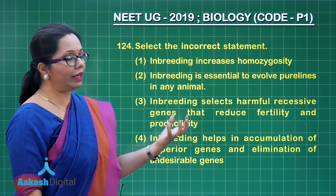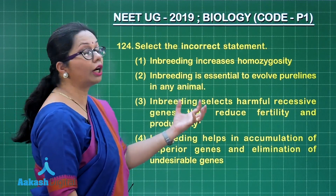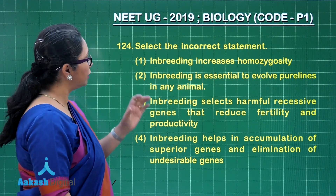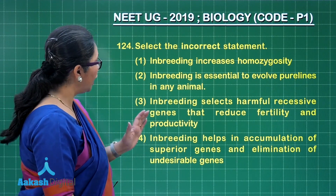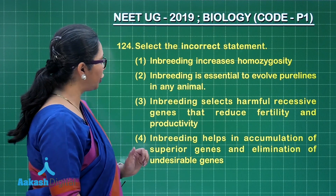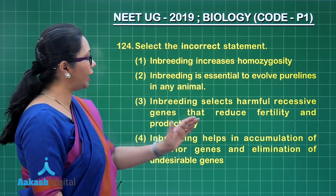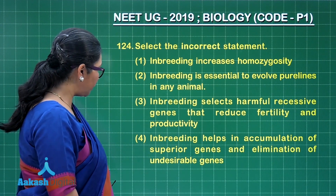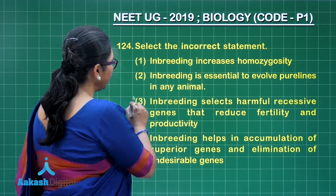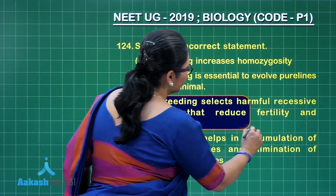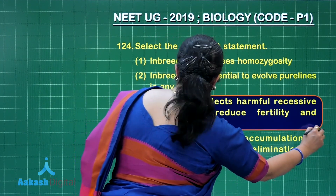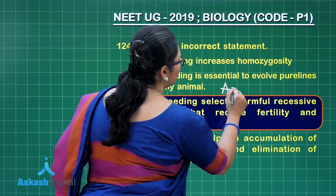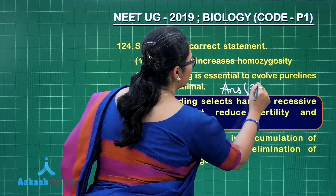select the superior alleles, not to select the harmful alleles, so this would be an incorrect statement. The fourth statement — inbreeding helps in accumulation of superior genes and elimination of undesirable genes — is a correct statement. The only incorrect statement is the third one, making option 3 the correct answer.